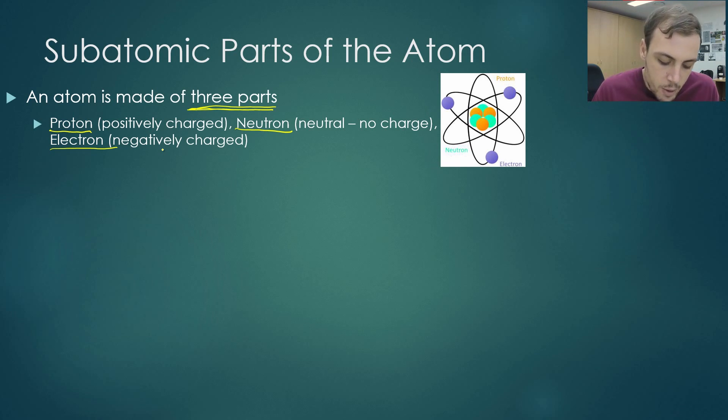Now we have a proton. Our proton is positive in charge. I remember this as proton positive, P for positive. Our neutron is neutral. So don't remember neutron as negative, because that's not correct. Remember a neutron as neutral. It does not have a charge. Our electron is negatively charged. So that's very important. You must remember the charges of all three of these subatomic particles.